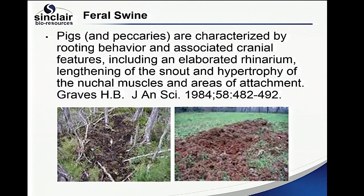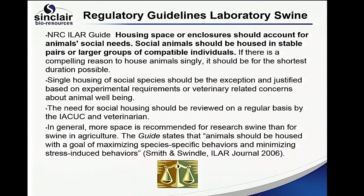You have to provide plenty of enrichment so they can perform those natural behaviors. We make a lot of rooting boxes from different materials. If they find anything loose in their pen, they'll play with it until it either comes off or something falls over — that's how they naturally get their food. The regulatory guidelines for laboratory swine state that housing enclosures should account for animal social needs, and social animals should be housed in stable pairs or larger groups of compatible individuals. The question I get most is: what do you consider compatible individuals? If we house them prior to shipping in a group of two, we've already defined that those animals are compatible.